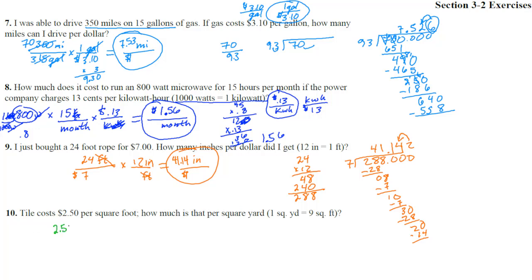Tile costs $2.50 per square foot. How much is that per square yard? We need to times by something that has square feet on the top and square yards on the bottom. How many square feet per square yard? Nine square feet for one square yard. That one looks pretty quick. We cancel that, and just times those two together.